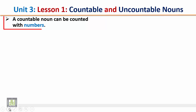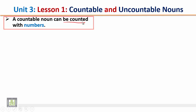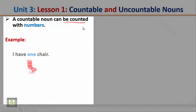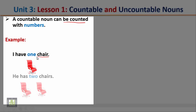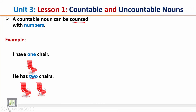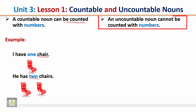First, a countable noun can be counted with numbers. Example: I have one chair. This noun is a countable noun because it can be counted. We can say one chair, we can say two chairs. So 'chair' is a countable noun.